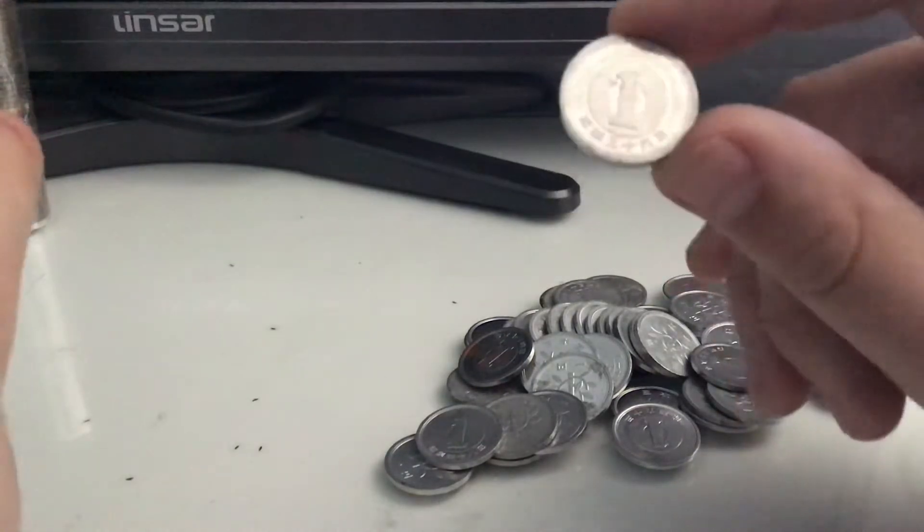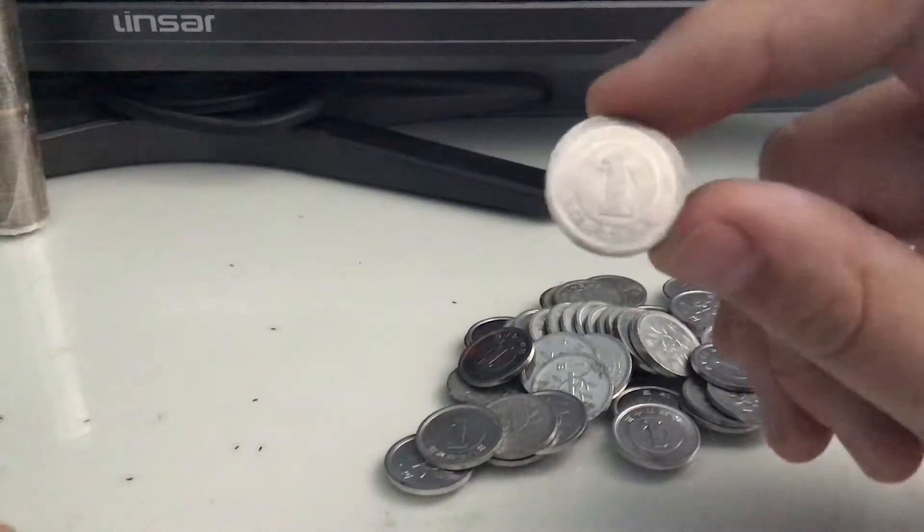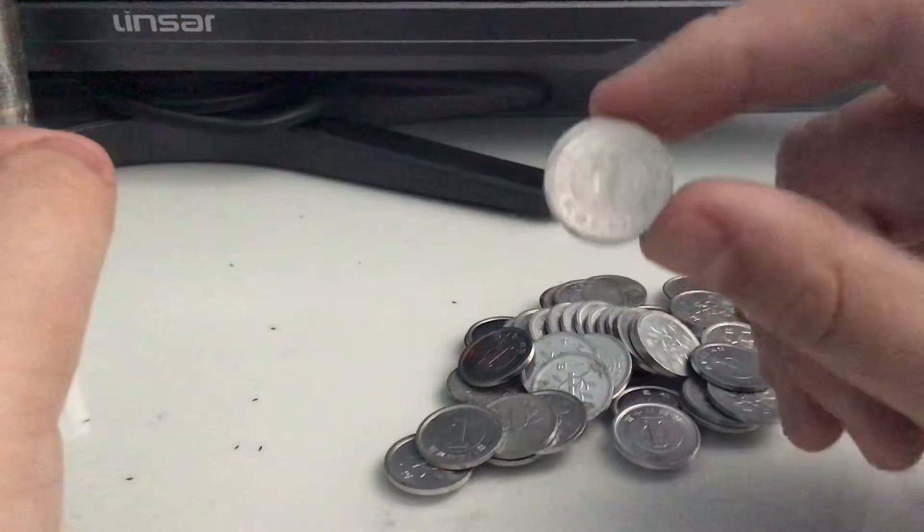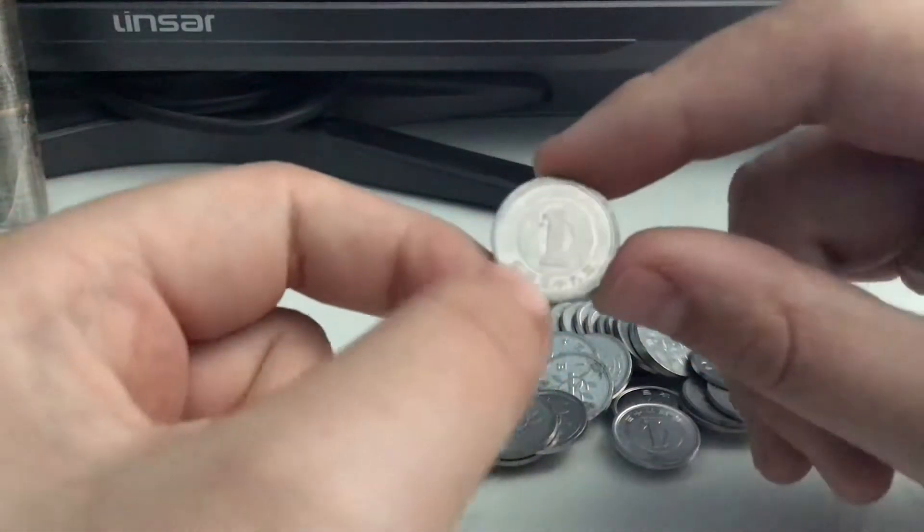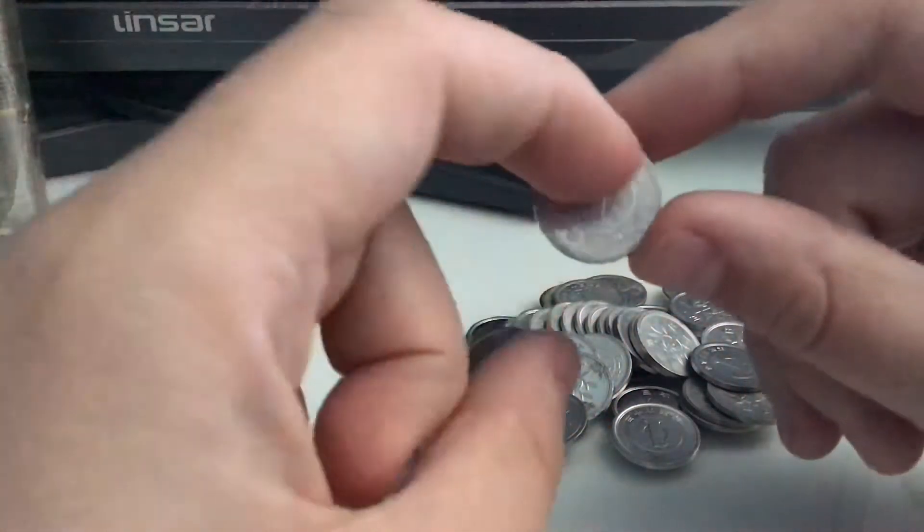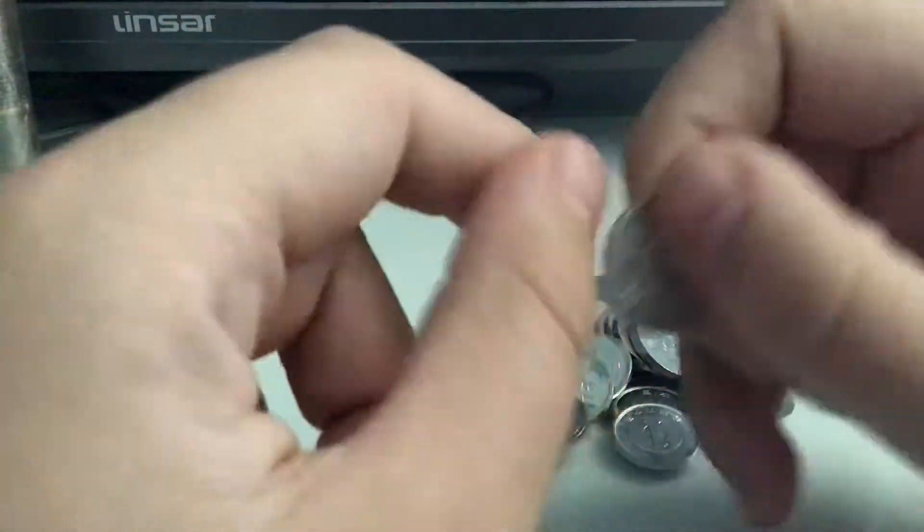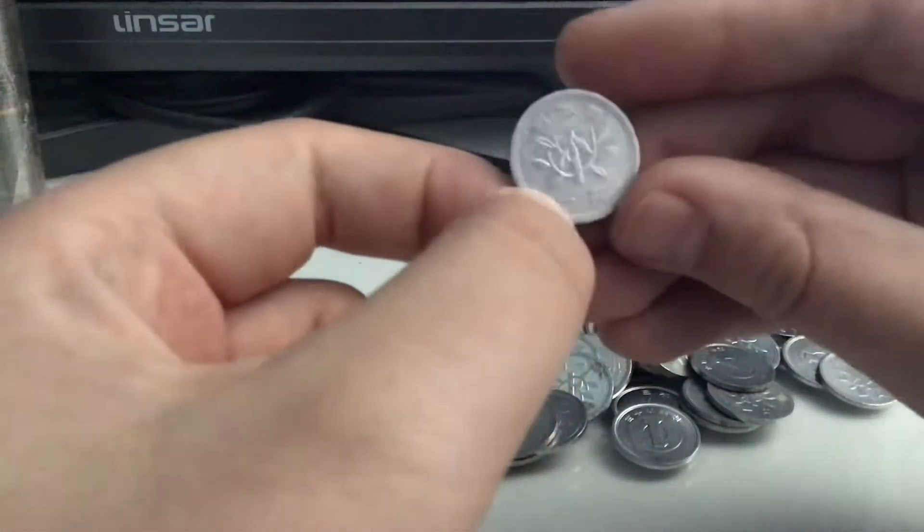So, in Japan you have things such as Showa 50 or Heisei 20, for example. It's not written in Gregorian dates. And then on the side here, we have a tree shoot.